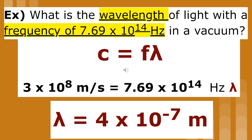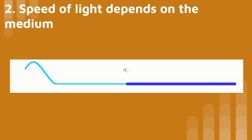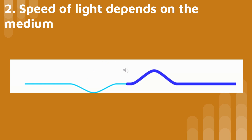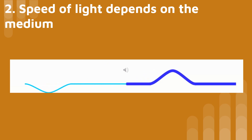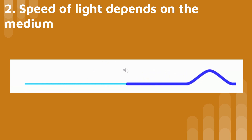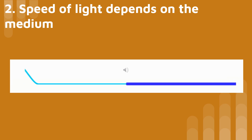Here is a simple plug-in problem. Since we are looking for the wavelength of light in a vacuum, we use the speed 3 times 10 to the 8th meters per second. You can get that number from page one of your reference table. The speed of light depends upon the medium through which it travels. Light has a maximum speed in a vacuum and is 2.5 times slower when it travels through diamonds.